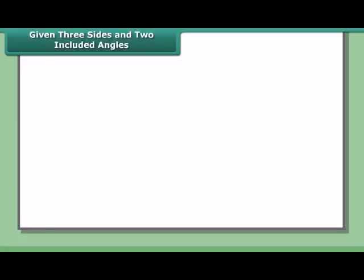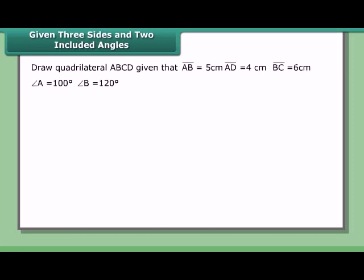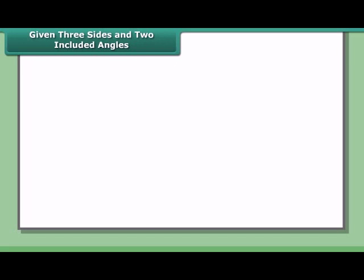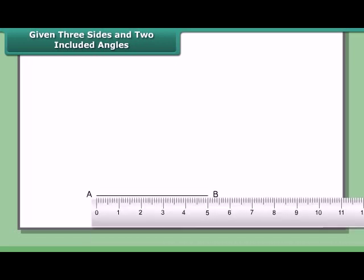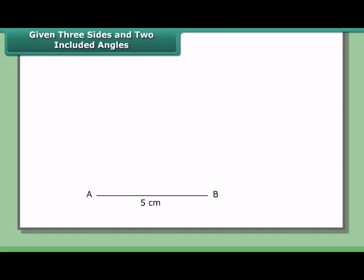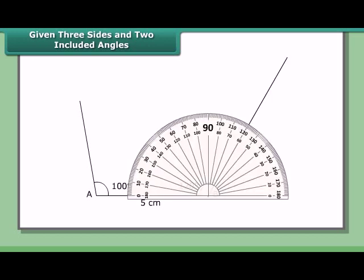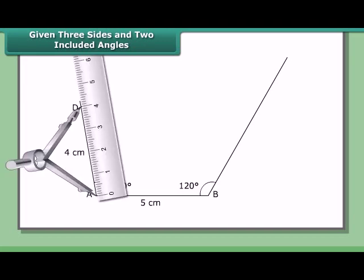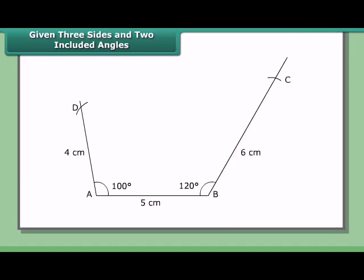Given three sides and two included angles, draw quadrilateral ABCD where AB = 5 cm, AD = 4 cm, BC = 6 cm, angle A = 100°, and angle B = 120°. Steps: 1. Draw AB = 5 cm. 2. At A, draw an angle of 100°, and at B, draw an angle of 120°. 3. Mark off AD = 4 cm and BC = 6 cm. 4. Join CD. ABCD is the required quadrilateral.